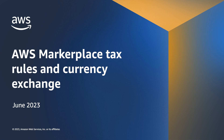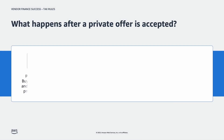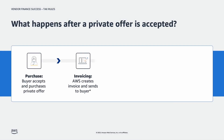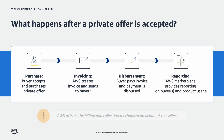In this video, we're going to review AWS Tax Assessment and Currency Exchange. First, let's review what happens after a private offer is accepted. After a private offer is accepted and the buyer purchases the offer, there are three key steps left in the process – invoicing, disbursement, and reporting. In this video, we're going to focus on invoicing and how tax and exchange rates affect invoices.